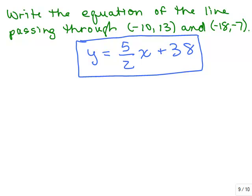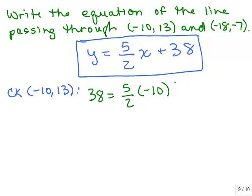So the original problem was write the equation of the line passing through (-10, 13) and (-18, -7), and we came up with the equation y = (5/2)x + 38. We looked at the graph, and that seemed reasonable, but we really want to check. So we're going to check to make sure that each of those points is on that line. So we're going to check (-10, 13). Let's do that one first. So we're going to plug in -10 for x. Oops, I forgot I'm plugging in also 38 for y.